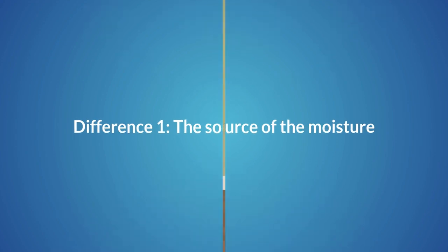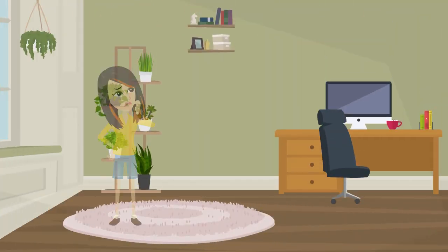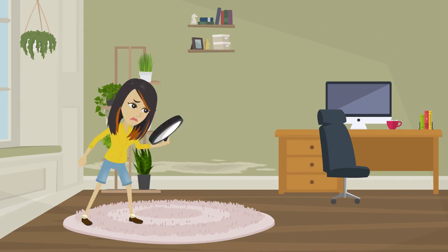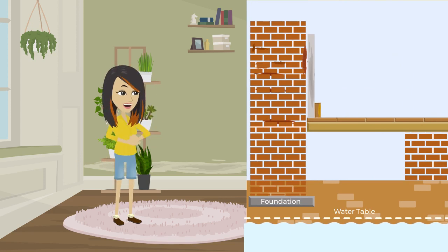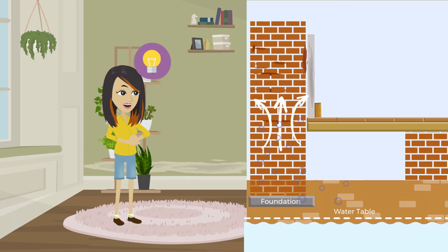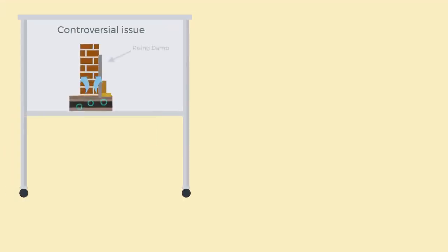Difference number one: the source of the moisture. It is extremely important to understand that rising damp can only be diagnosed when you can determine if the damp stains and moisture found on your internal walls are coming from moisture in the ground that has been soaked up through the masonry, or possibly from penetrating damp. This process is called capillary action.